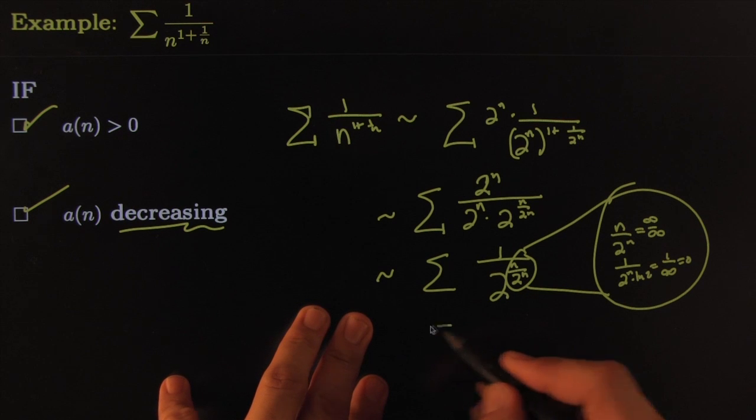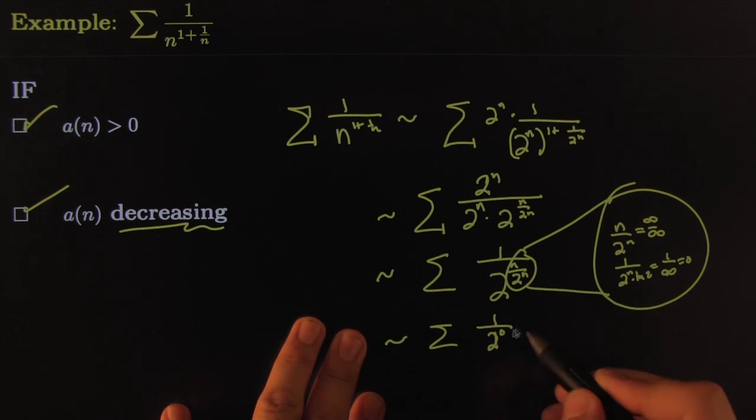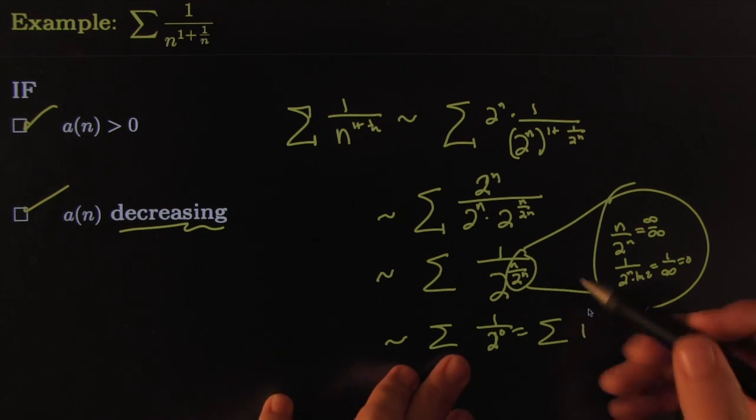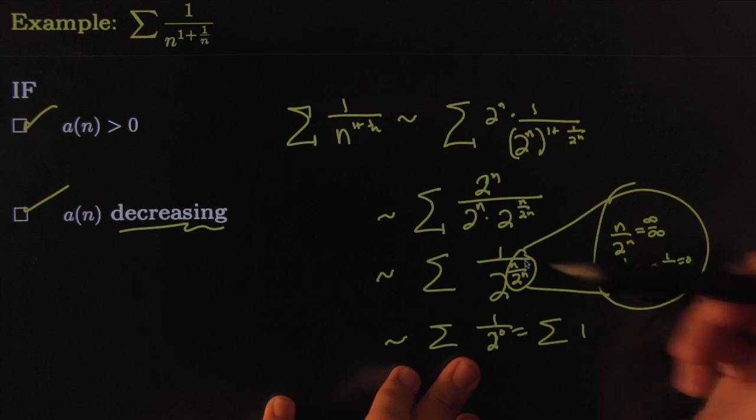So for large n, this is going towards 0, clearly because the bottom is much more powerful than the top. So these terms look roughly like 1 over 2 to the 0, which is equal to summation of 1.